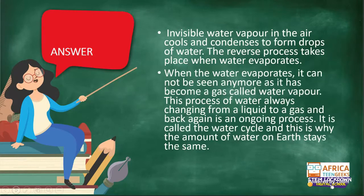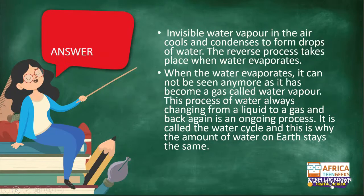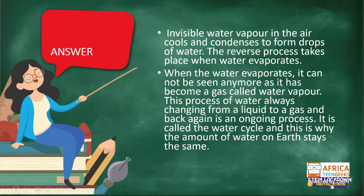When water evaporates it cannot be seen anymore — it has become a gas. We cannot see gases; for example, we know there's oxygen in the air that we breathe in and out, but we cannot see it. This process of water changing from a liquid to a gas and back again is ongoing — it is continuous and happens constantly.